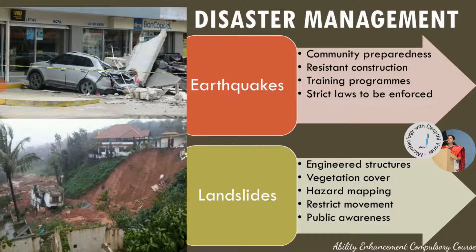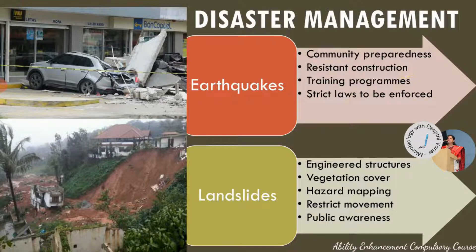One of the first methods for preparing is community preparedness. This is something common for all disaster management because we need to ensure that the community and people are well prepared. There are training programs conducted for architects, engineers, builders, and masons so that they can build resistant construction. They can construct buildings using materials that have a flexible foundation, or shock absorbers built into the building material. They use materials like wood or memory alloy which are earthquake resistant.